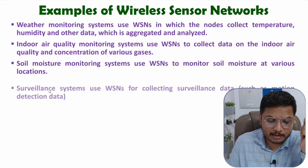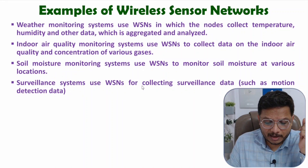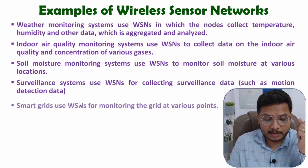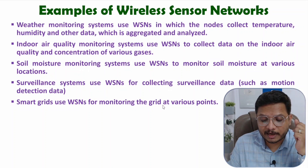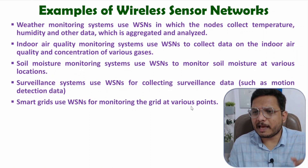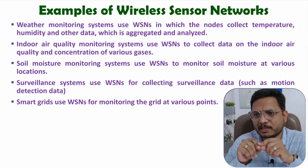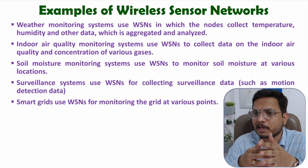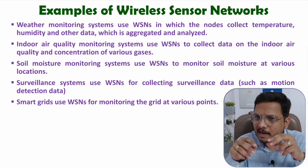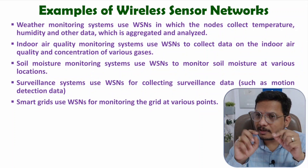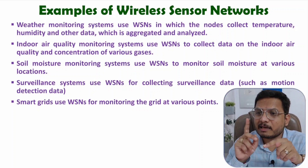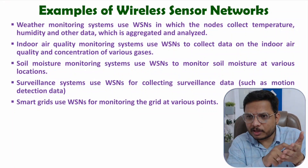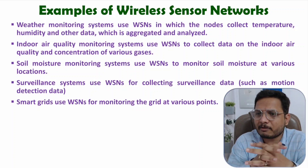In surveillance systems also we are using WSN, where we are collecting data like motion data. In smart grid also we use WSN for monitoring the grid at various points. In farming also we can use WSN — if you have a large size farm and want automation without human intervention, you can use WSN where at different locations of the farm you can place end nodes. Those end nodes can measure temperature, humidity, and soil moisture. If you take that data on the internet, with the use of a mobile you can control everything.